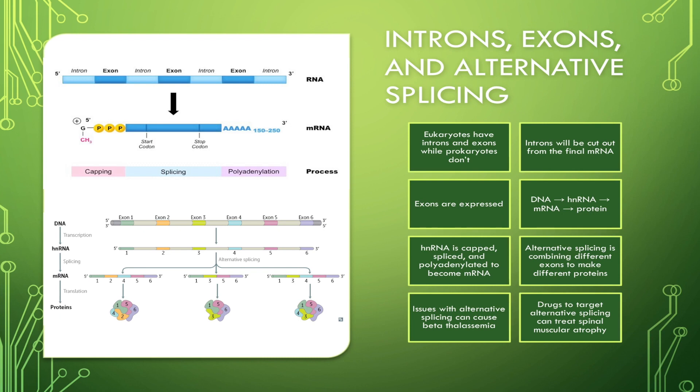What are introns? Introns are intervening sequences that will be cut out from the final mRNA. Introns do not code for proteins, but they're important in the regulation of gene expression.